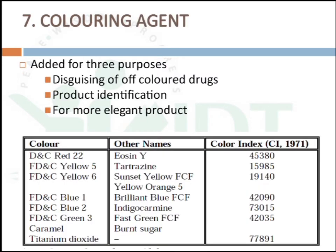Coloring agents are mainly used for three purposes: disguising off-colored drugs, product identification, and producing a more elegant product. Examples of coloring agents include titanium dioxide, caramel (also known as burnt sugar), and Brilliant Blue FCF.